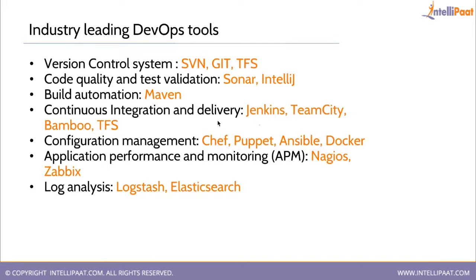Jenkins and Bamboo are the most commonly used CI/CD tools. TeamCity is a paid Microsoft product, so fewer people use it. TFS is also an option. Bamboo is a paid product by Atlassian, while Jenkins is open source. Jenkins was originally developed by Sun Microsystems and marketed as Hudson. After Oracle acquired Sun, Jenkins became an open source fork of that Hudson software.